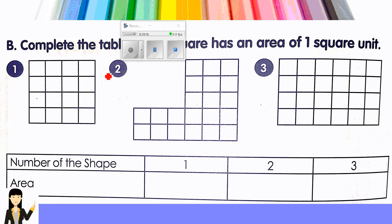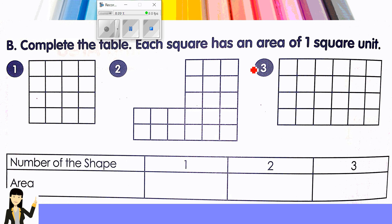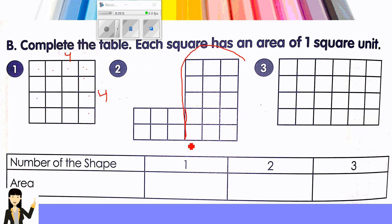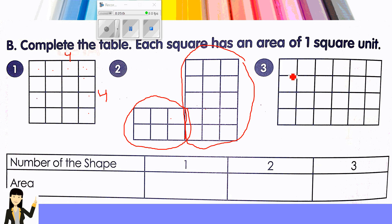Complete the table — each square has an area of one square unit. For number one, count the length: one, two, three, four and the width: one, two, three, four — four by four equals 16 square units. For number two, find this rectangle first, then the other rectangle, add the areas together. Count the first row and the first column, multiply, and write the answer in square units.